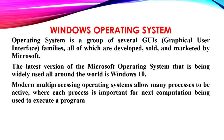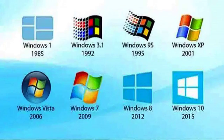Windows operating system is a group of several GUIs — graphical user interface — families, all of which are developed, sold, and marketed by Microsoft. The latest version of the Microsoft operating system being widely used all around the world is Windows 10. Modern multiprocessing operating systems allow many processes to be active, where each process is important for the next computation being used to execute a program.